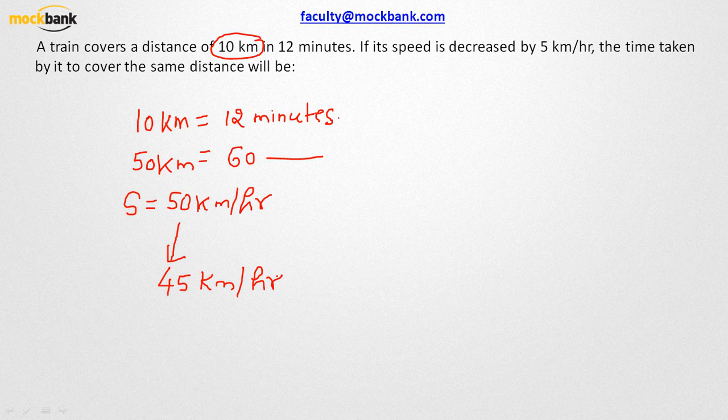Now what is the question? The question is, had the speed been 50 km per hour, the train would have taken 12 minutes to cover 10 km. Now when the speed has become 45 km per hour, how much time would the train take to cover the same distance?